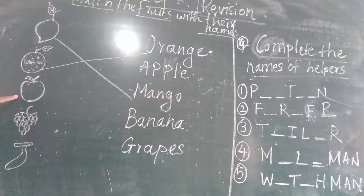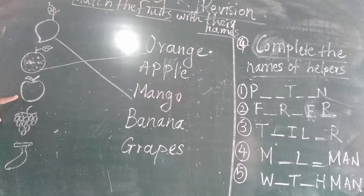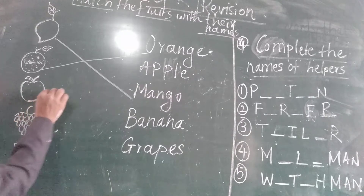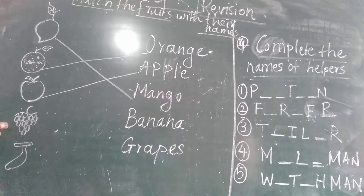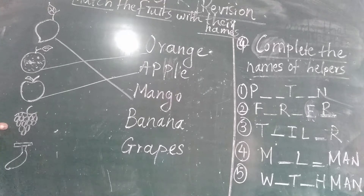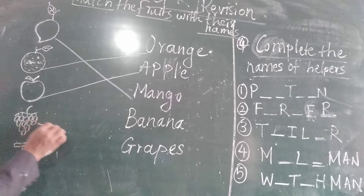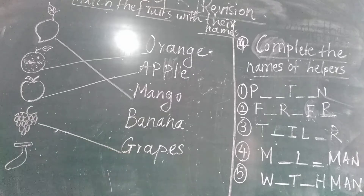Apple — this picture is so nice, apple. A-P-P-L-E apple. A-P-P-L-E apple. Now like this you have to match. See here — those are grapes. G-R-A-P-E-S grapes. G-R-A-P-E-S grapes.